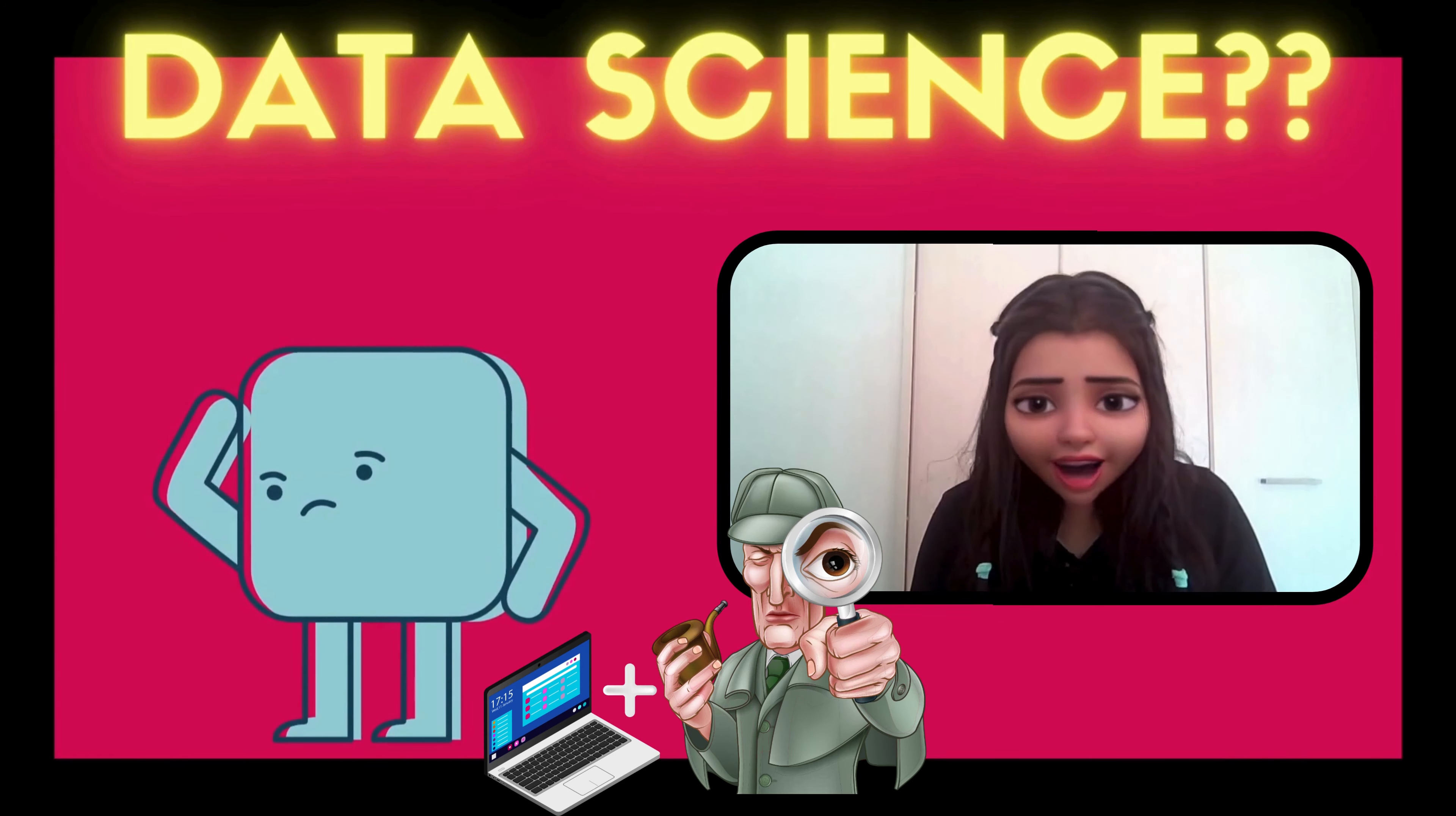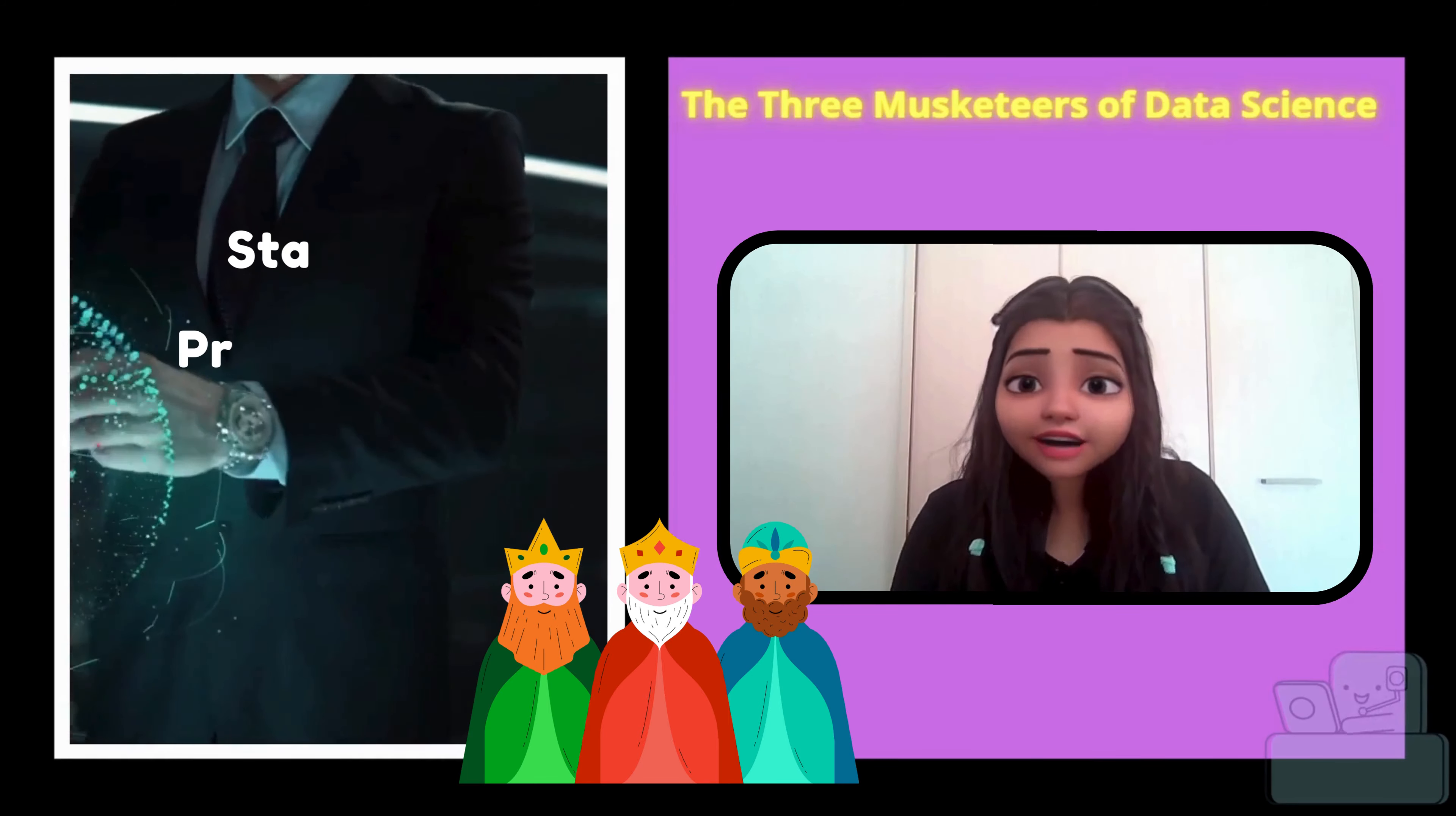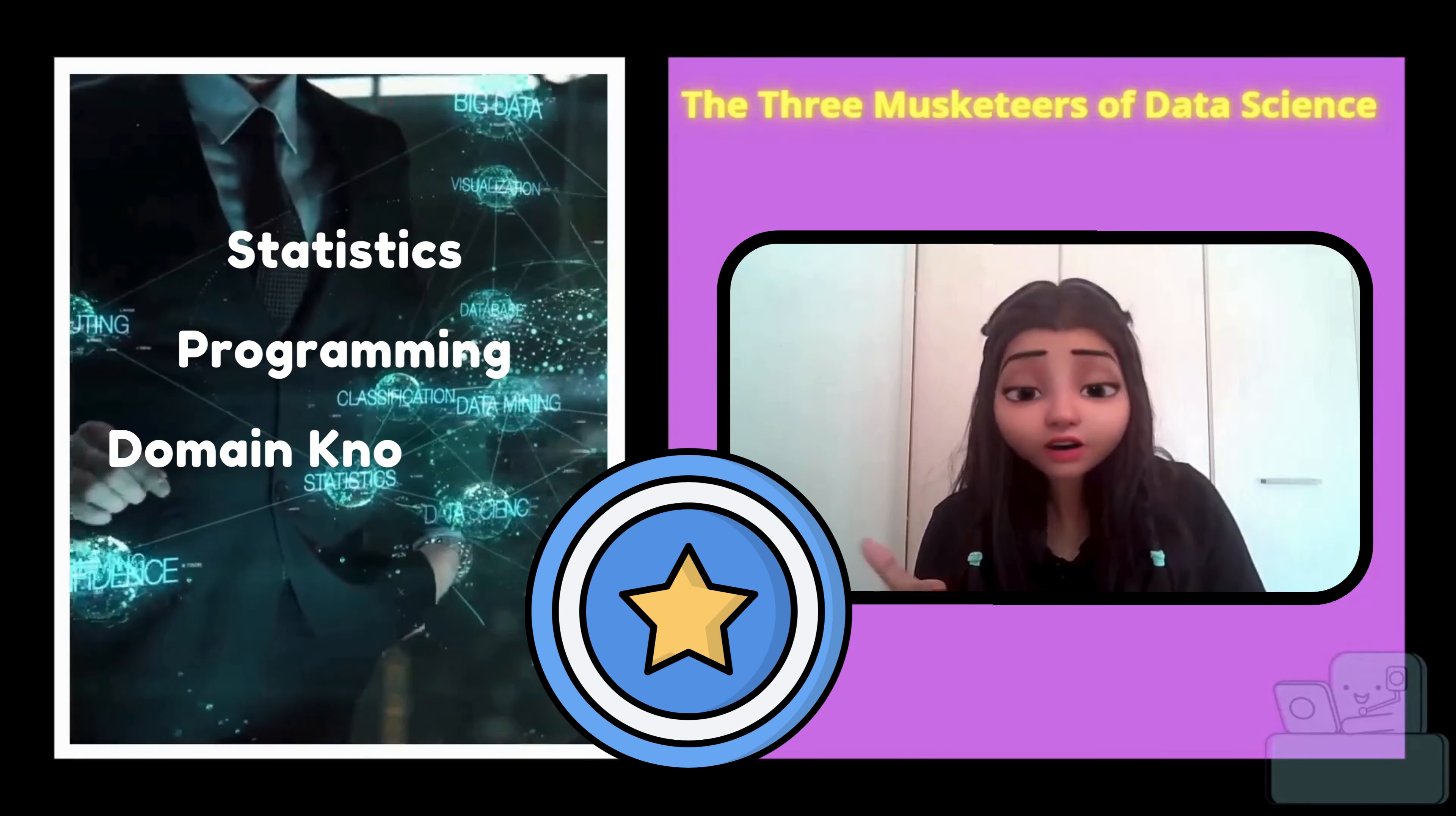Now let's talk about the three musketeers of data science. Meet our trio: statistics, programming, and domain knowledge. Think of them as the Avengers - each brings their superpower to the data world. Together they conquer the data universe.